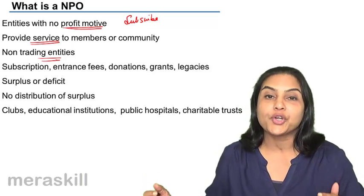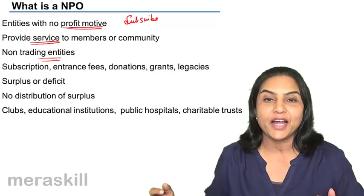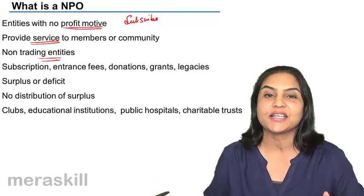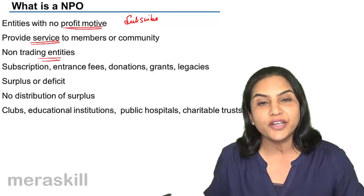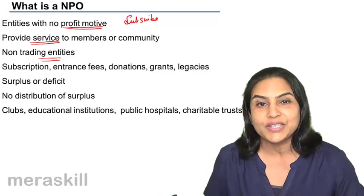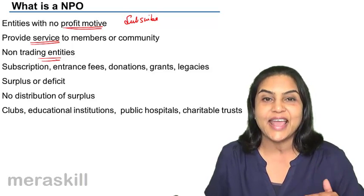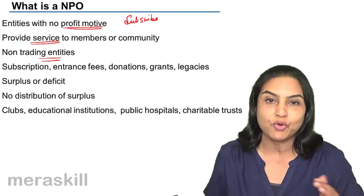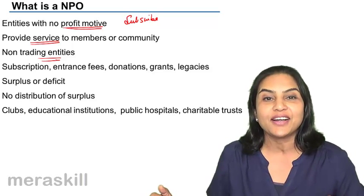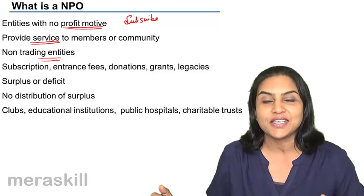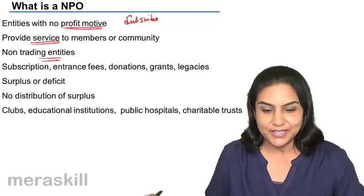Since it is a not-for-profit organization, we do not call the result profit or loss. We say we either have a surplus — that is, excess of income over expenditure — or we have a deficit, that is, excess of expenditure over income.